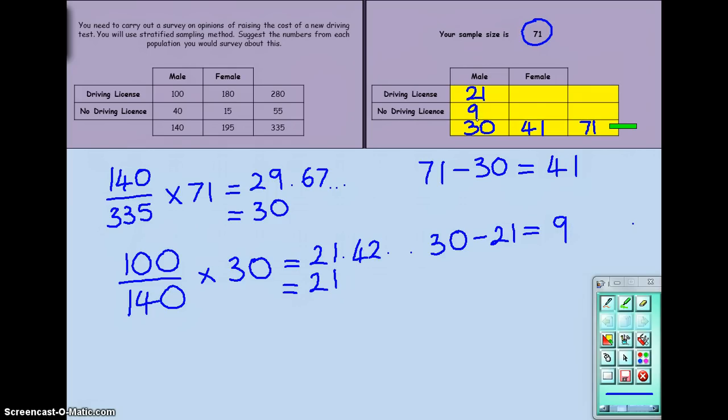Now, we just need to repeat that process now with the female population. So, let's have a look at this. The number of females with a driving licence in the original population is, as a fraction, 180 out of 195.